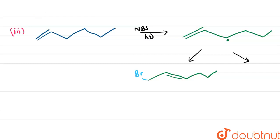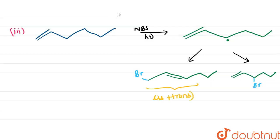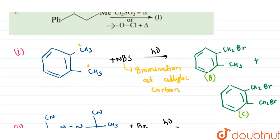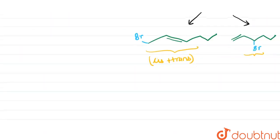If the compound does not undergo resonance, the product is formed with bromine at that position. The first compound — the resonance product — shows cis and trans isomers (cis + trans), while the non-resonance compound does not show any isomers.